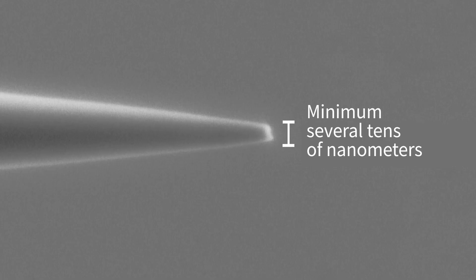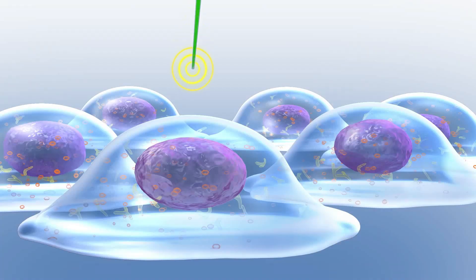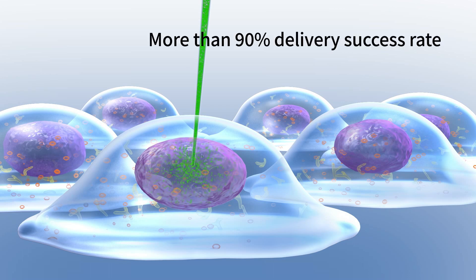Nanopipettes, with tip diameters of only a few tens of nanometers, are used to minimize damage to living cells. Automatic detection of cell surfaces, solution and substance delivery, and return to a specified height are automated capabilities of the SU-10 system.